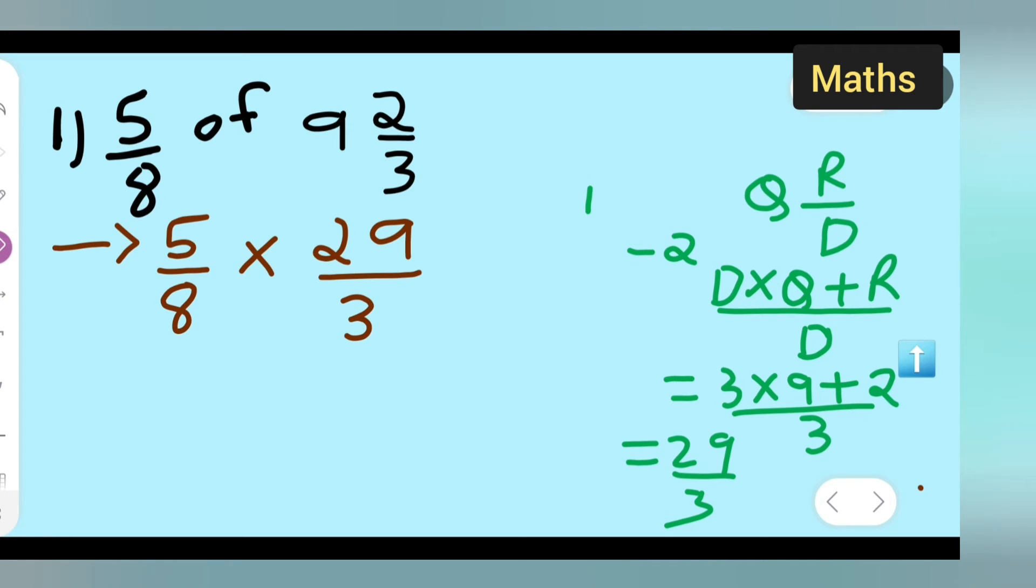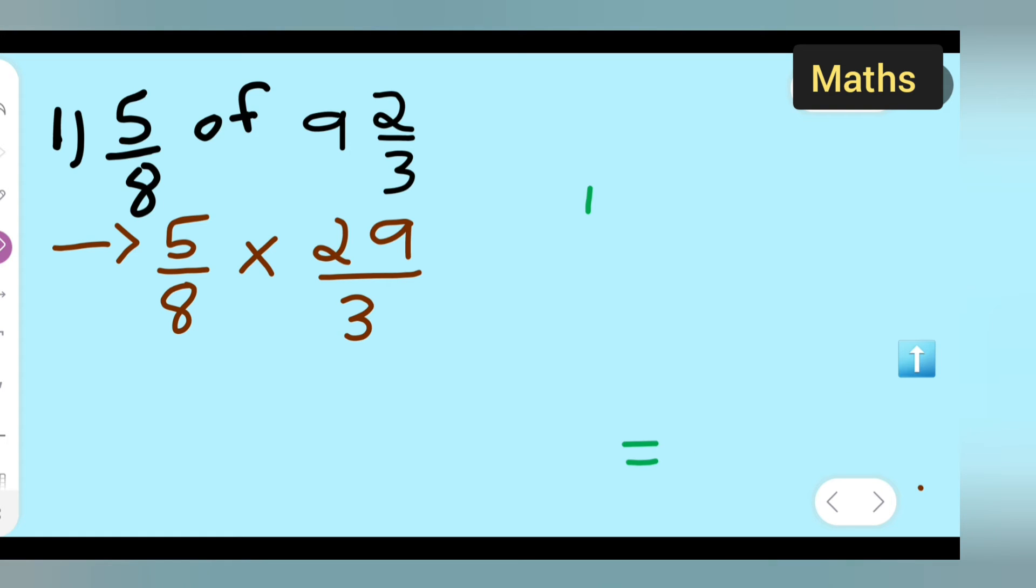Since nothing is getting cancelled, you can write down 5 multiplied by 29 upon 8 multiplied by 3.